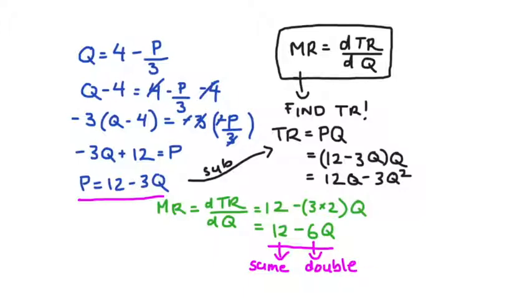The trick is, then, when we want to find marginal revenue and our demand curve is linear, we can find the marginal revenue curve just by keeping the same intercept as the demand curve and just doubling the slope.